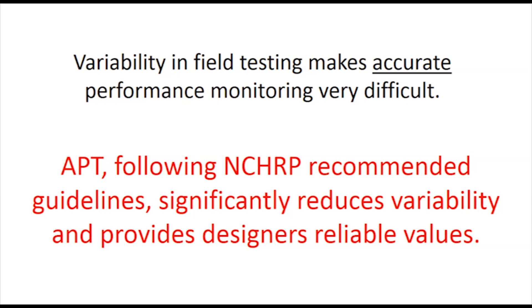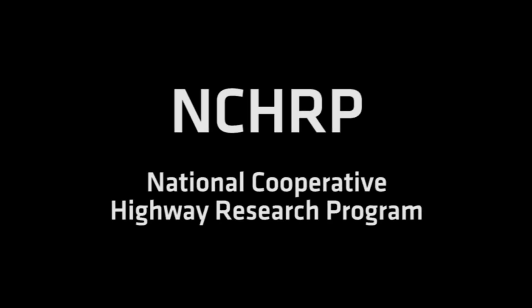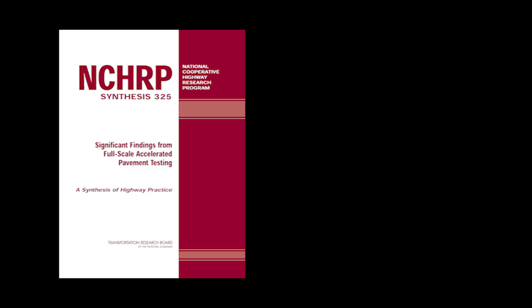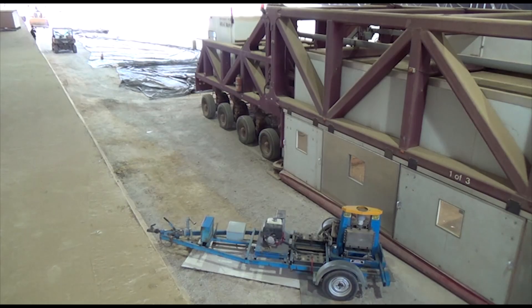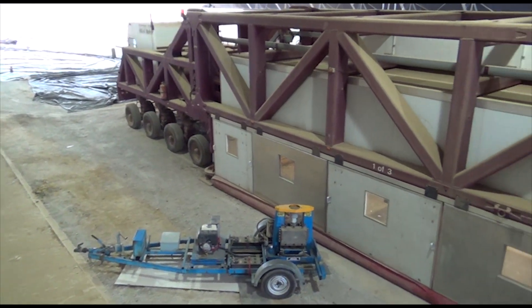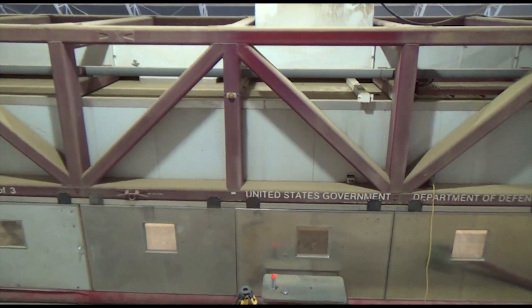APT allows for construction and testing to be performed in a more controlled manner, providing pavement designers with more accurate and precise data. Guidelines for performing APT performance validation have been established. These guidelines are outlined by the National Cooperative Highway Research Program, or NCHRP, in two reports: NCHRP Synthesis 325 and NCHRP Report 512. These guidelines allow researchers to isolate the benefits of a single component, such as a triax-stabilized aggregate layer, within a pavement structure. Variables are reduced or eliminated so that the results are accurate and reproducible.